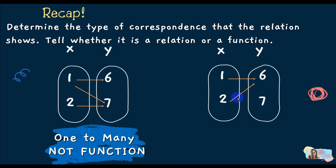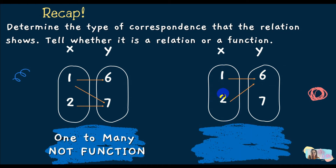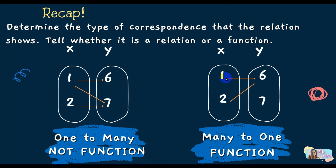Another mapping diagram: two elements from x each have one partner in y. So the correspondence is many-to-one. And remember, many-to-one correspondence is a function — because no x value repeats. Even though the y element repeats (both map to 6), that doesn't affect the function. Only x values matter.